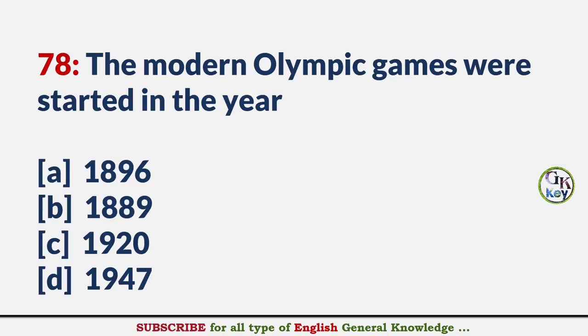The modern Olympic Games were started in the year? Answer A: 1896.